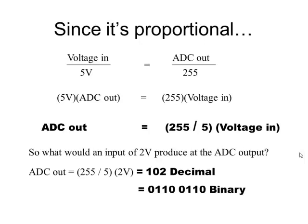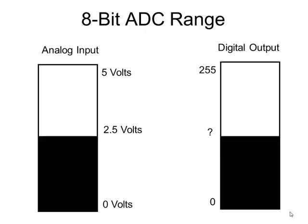We plug 2 volts into the formula and we come up with a number of 102 decimal. If we convert that into binary, that's what the binary number would be. So the analog output is just proportional to the voltage in.